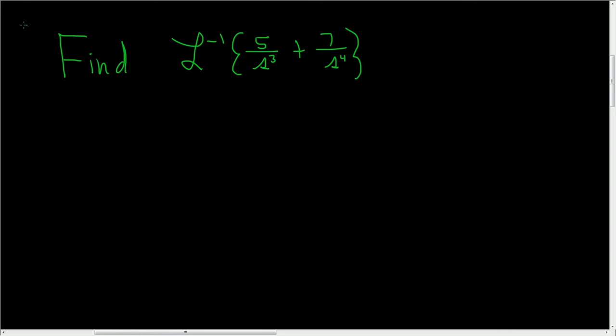Find the inverse Laplace transform of 5 over s cubed plus 7 over s to the 4th. The formula that we need to know for this problem says that the inverse Laplace transform of n factorial over s to the n plus 1 is simply t to the n.